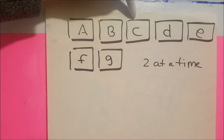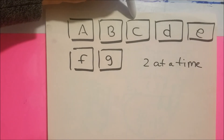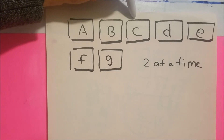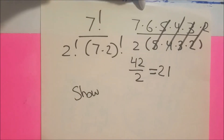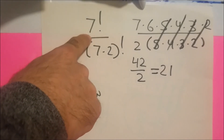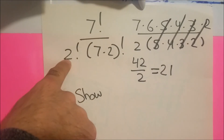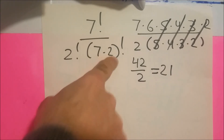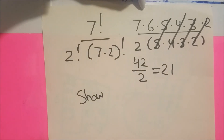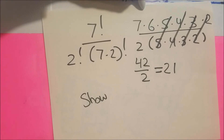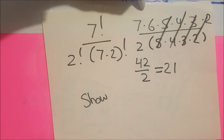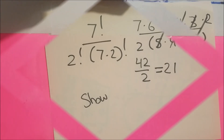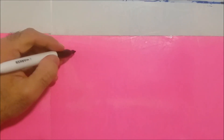Now try this one: we have seven blocks and we want to take them two at a time — how many combinations can we have? Using the formula, n is seven, k is two, and seven minus two is five. We do the factorials on top, cancel out the five, four, three, and two, and we're left with seven times six, which is forty-two, divided by two — that's twenty-one combinations.